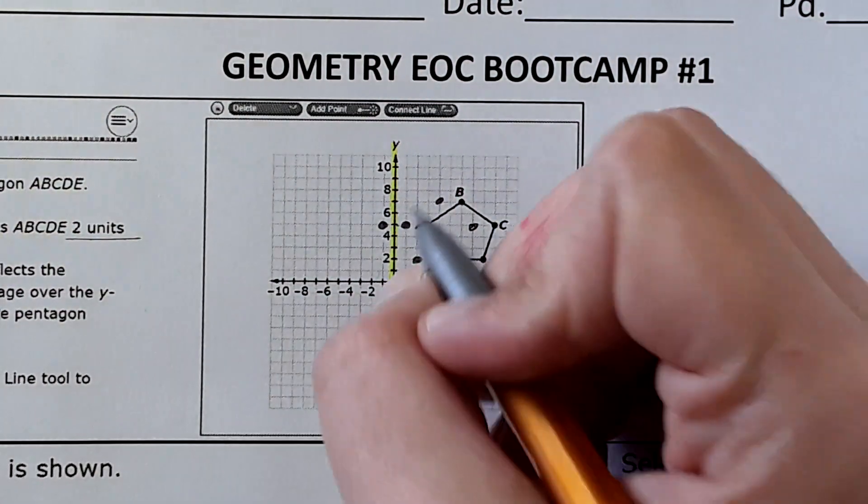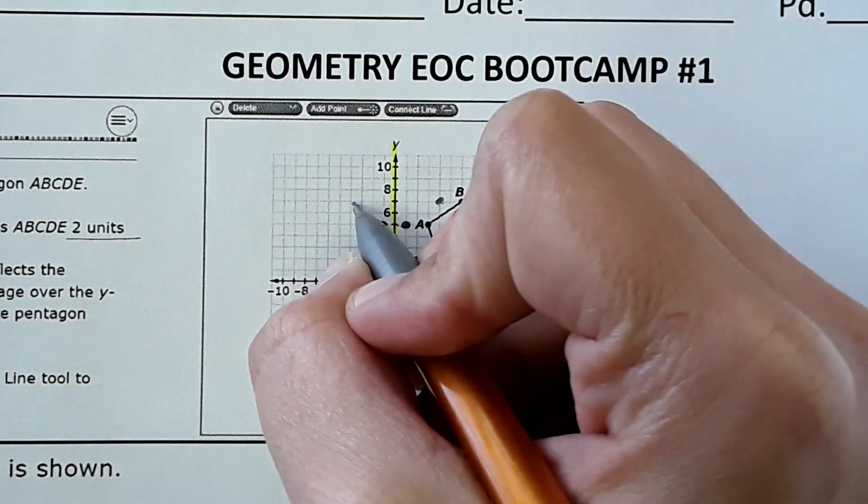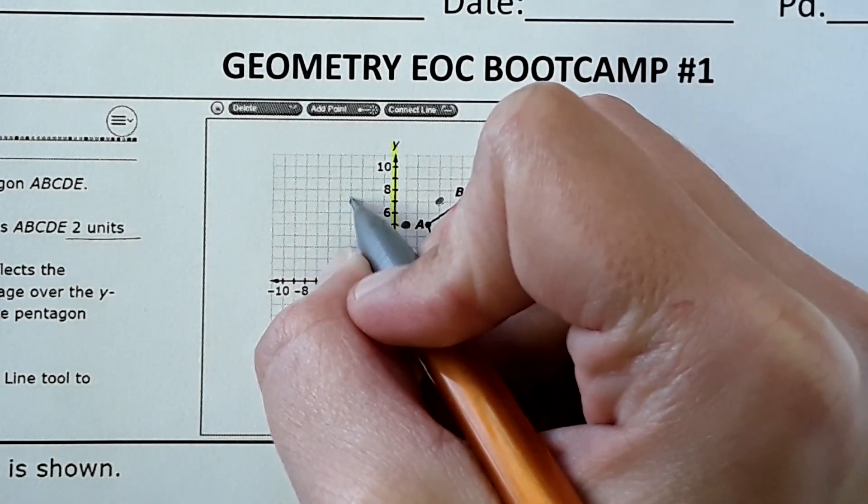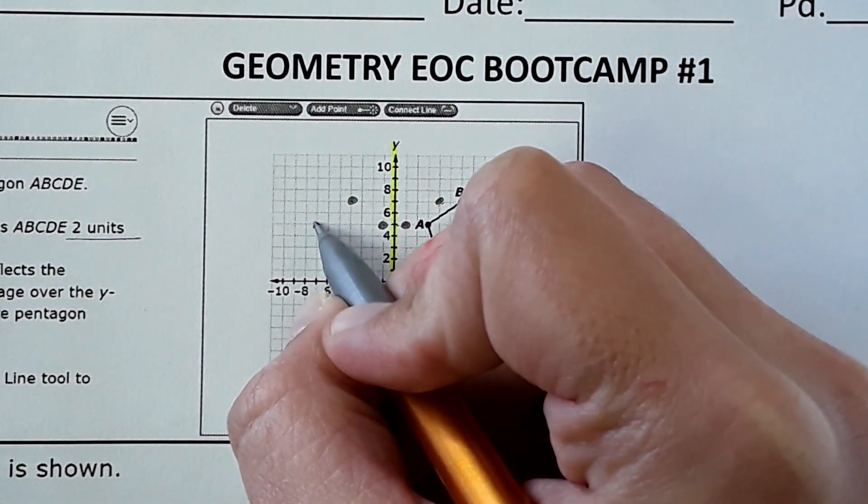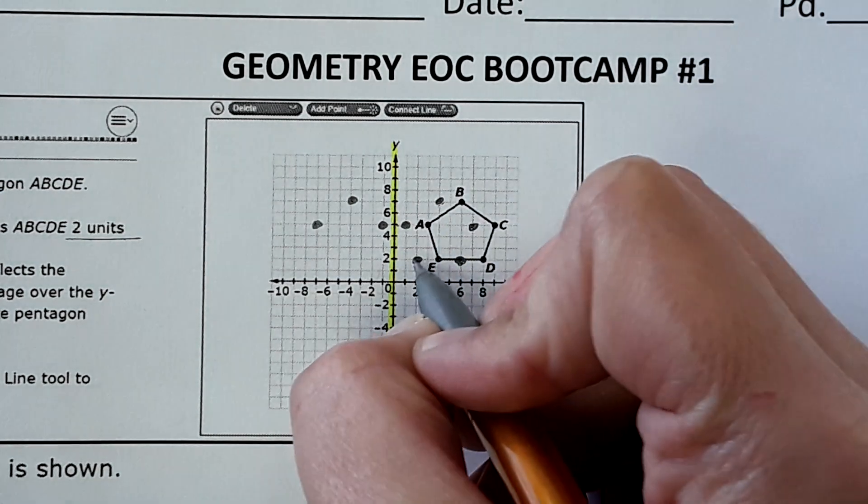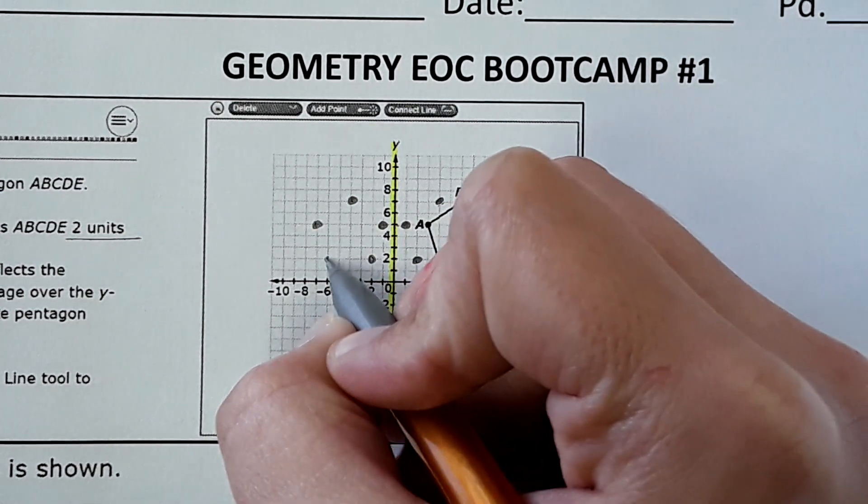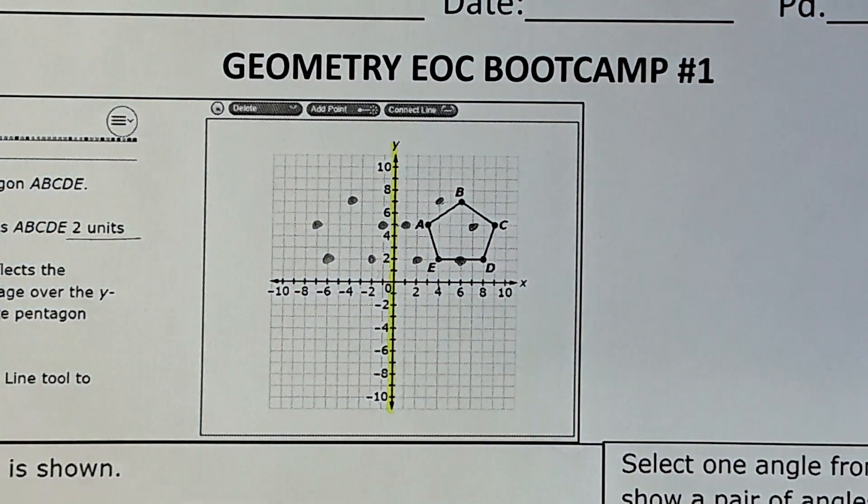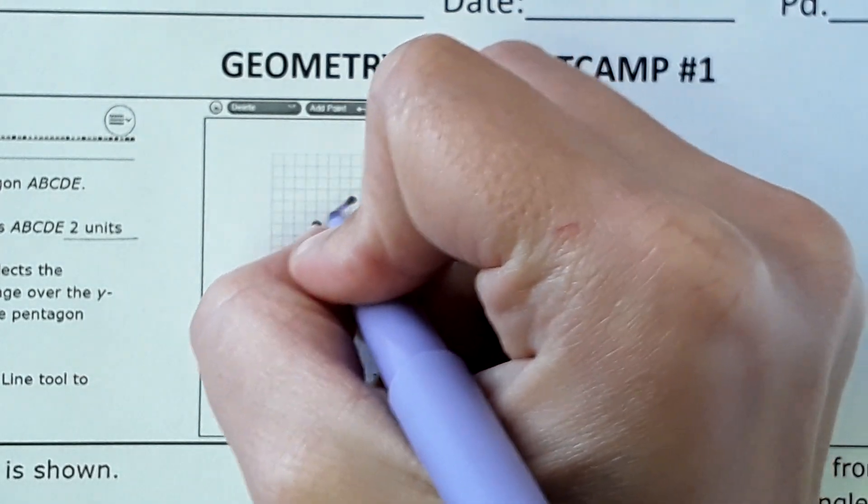This one is one unit away so I put it one unit away from the y-axis on the other side. This point is at four so I'd put it at negative four. This one's at seven so I'd translate it to negative seven. This one's at six so put it at negative six. Here is our answer that we would submit.